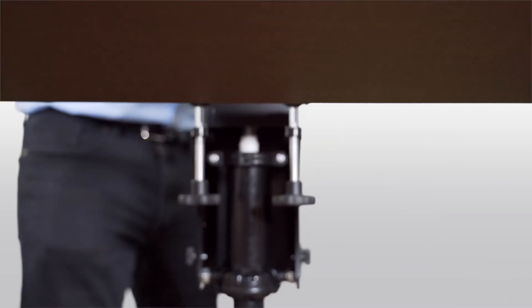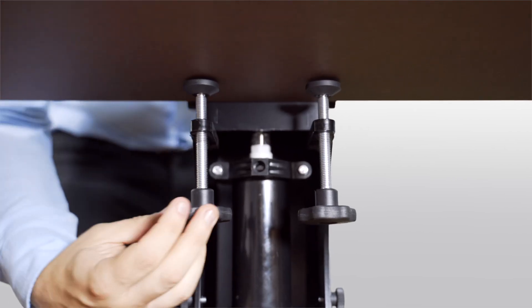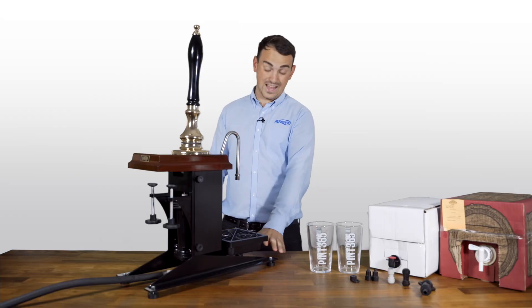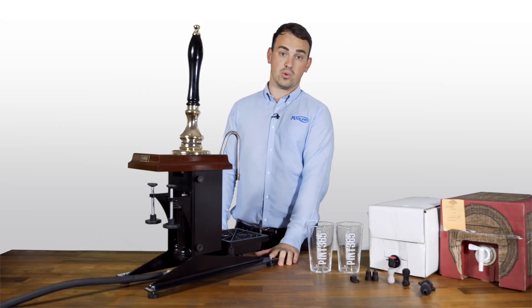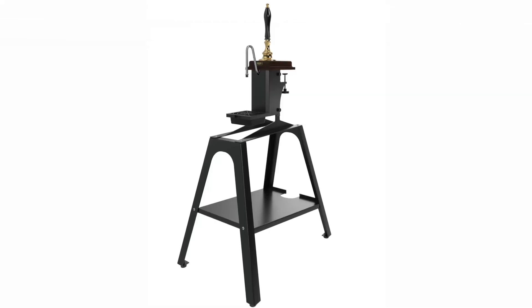When you receive your Pint 365, you will need to take it out of the box and mount it onto a work surface. Here we have it on the work surface stand, but it is also available in a freestanding unit as well.